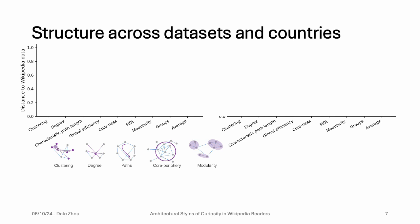On the y-axis, we're determining the distance of different data sets to the Wikipedia mobile app data. We'll be comparing the laboratory data, other data sources, and on the right we'll be comparing different languages.